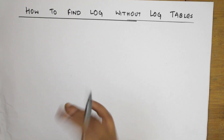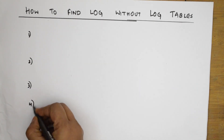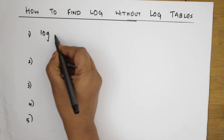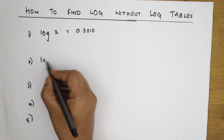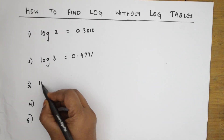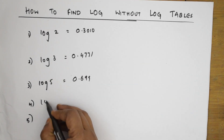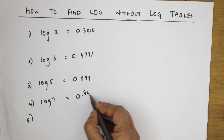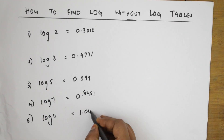For that, remember some basic things — just five values. First, remember log 2 = 0.3010. Next, remember log 3 = 0.4771. After that, log 5 = 0.6990. Also remember log 7 = 0.8451. Last but not least, log 11 = 1.0414. Remember and memorize all these five values.